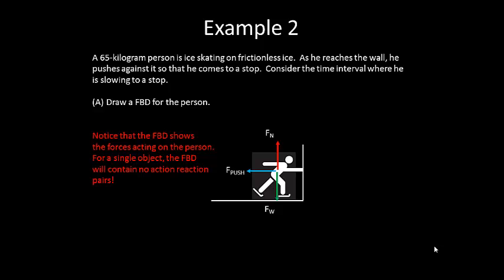Notice that the free-body diagram shows the forces acting on the person. For a single object, the free-body diagram will never contain any action-reaction pairs. Because the free-body diagram only shows the forces acting on one object and action-reaction pairs are always acting on two different objects.